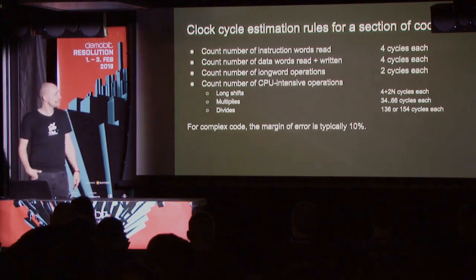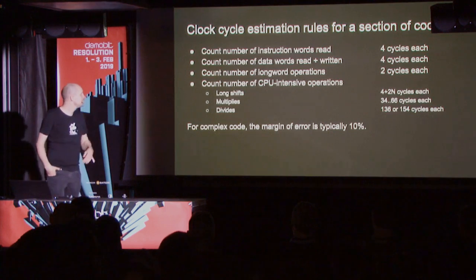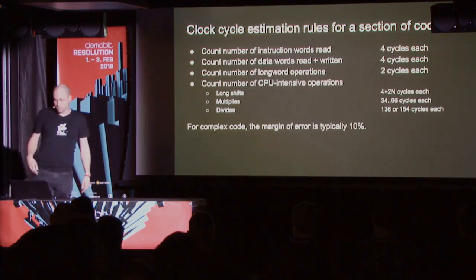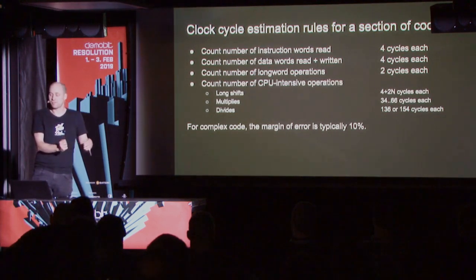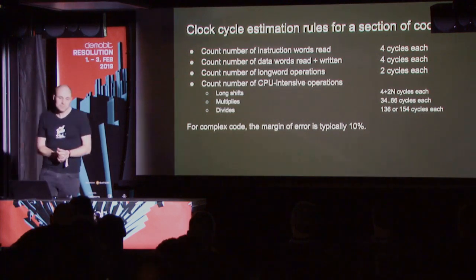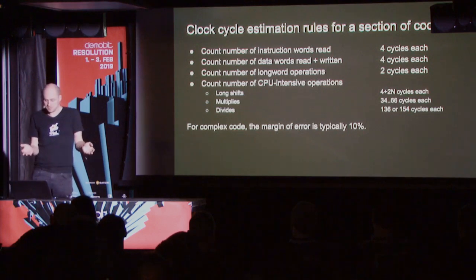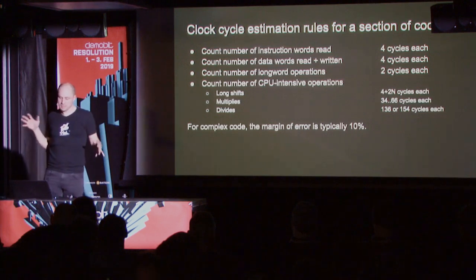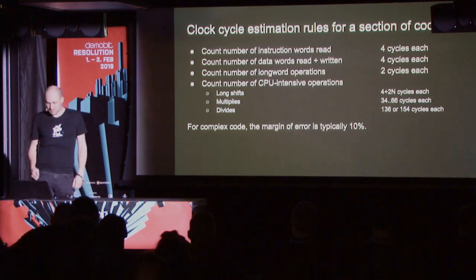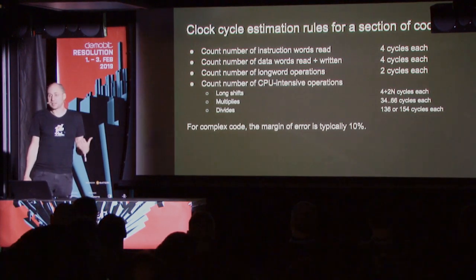Here's a bunch of rules of thumb I developed. If you count how many memory accesses the processor needs to complete a piece of code and multiply that by four, you get a good starting point. Add two cycles for each long word operation, and also add counts for CPU-intensive operations. If you do this, you don't need the tables and the error margin is going to be like 10%.